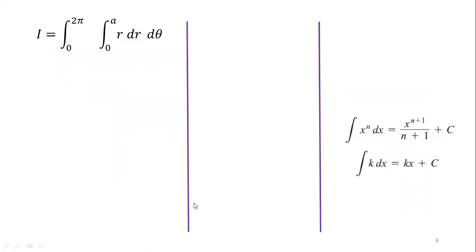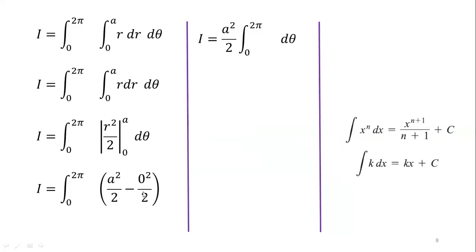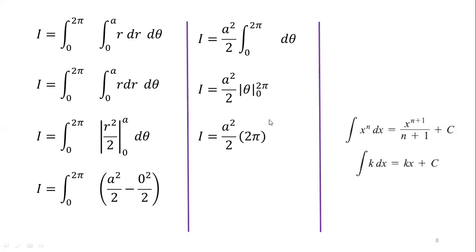In the next step we evaluate this integral. You must know two integration formulas. We integrate r dr from 0 to a, giving r squared over 2 evaluated from 0 to a. Applying the limits, we get a squared over 2. Since a squared over 2 is constant, we take it outside: a squared over 2 times the integral from 0 to 2π dθ. Integrating, we get a squared over 2 times theta evaluated from 0 to 2π. Applying the limits gives 2π, and the 2's cancel, so our answer is π times a squared.